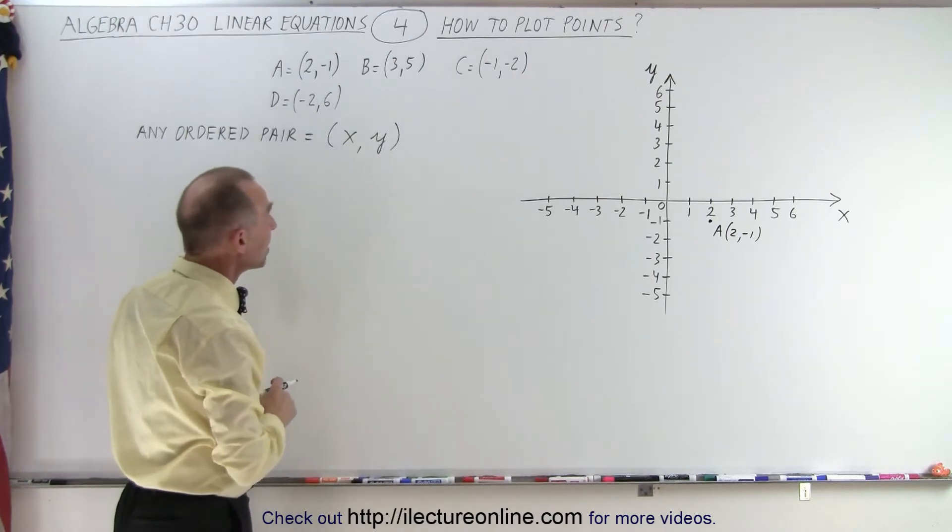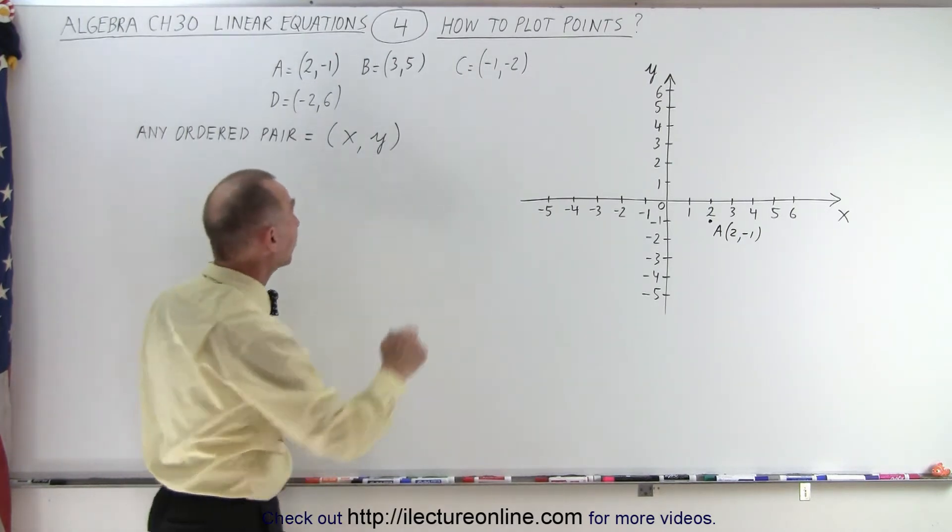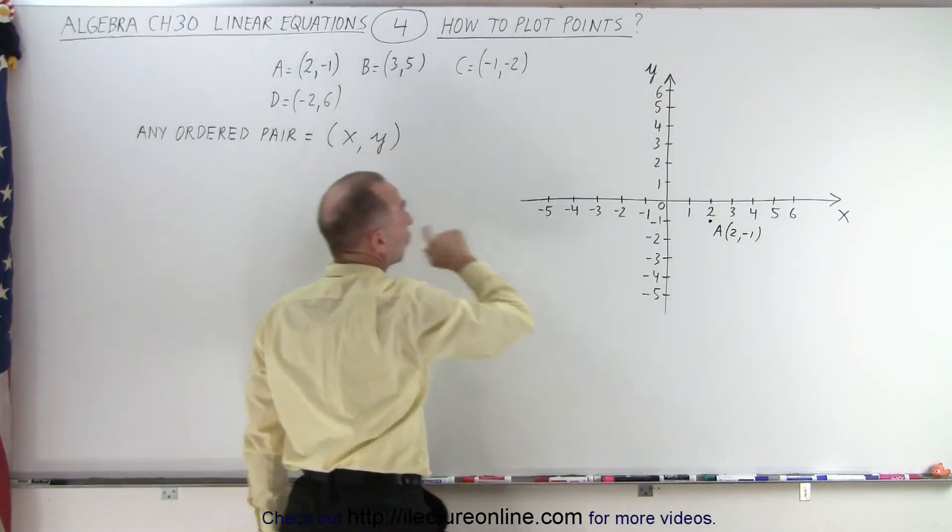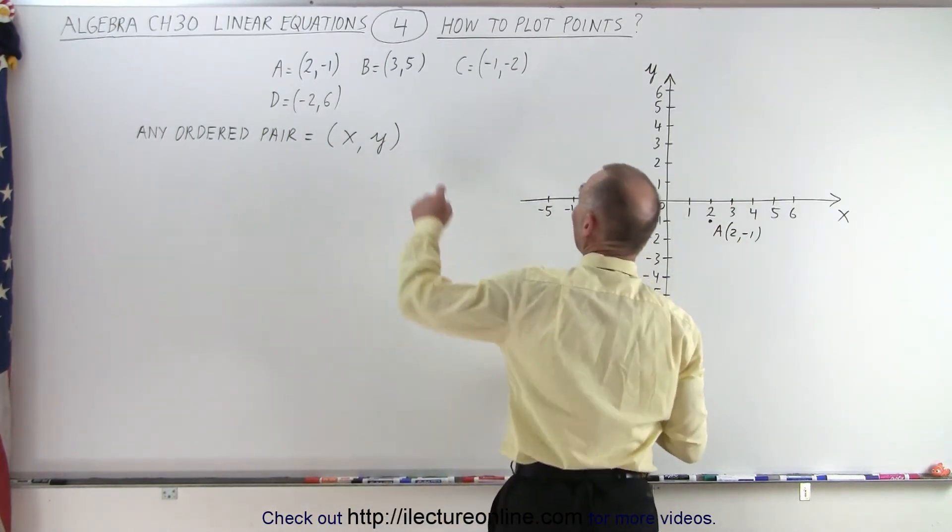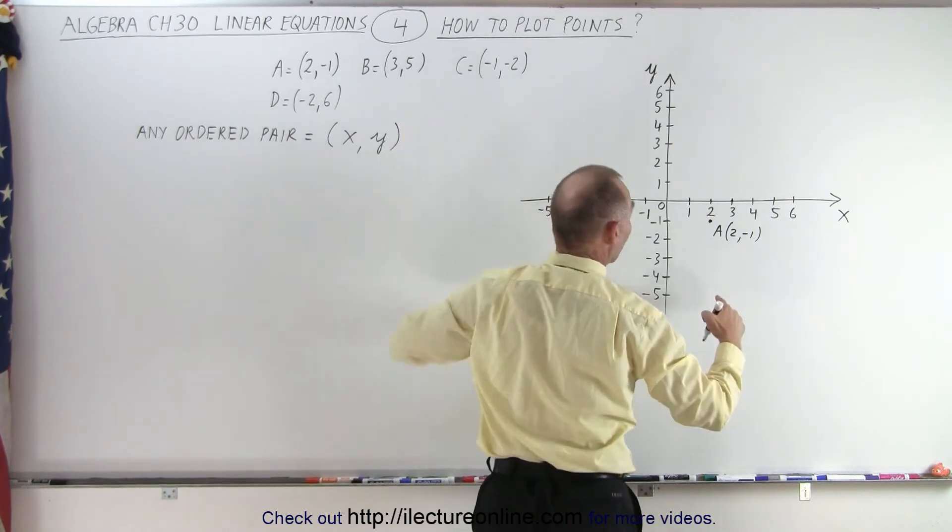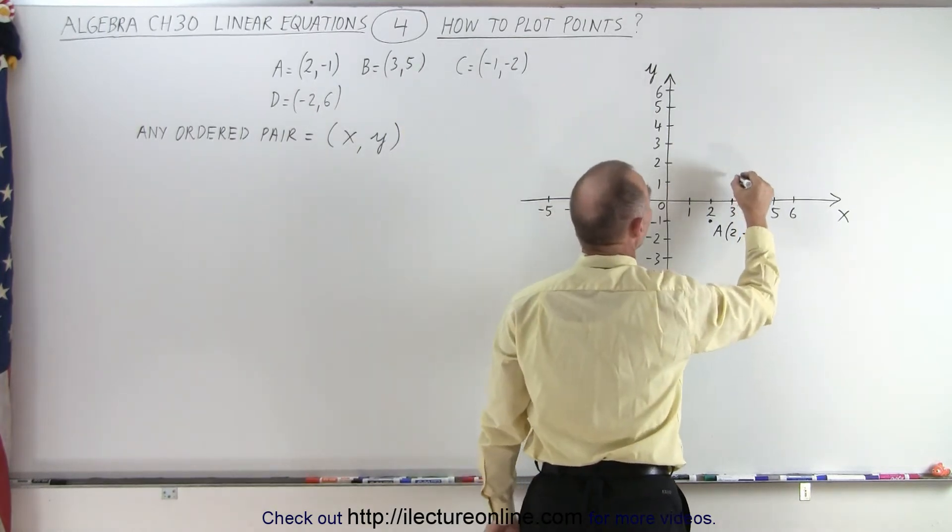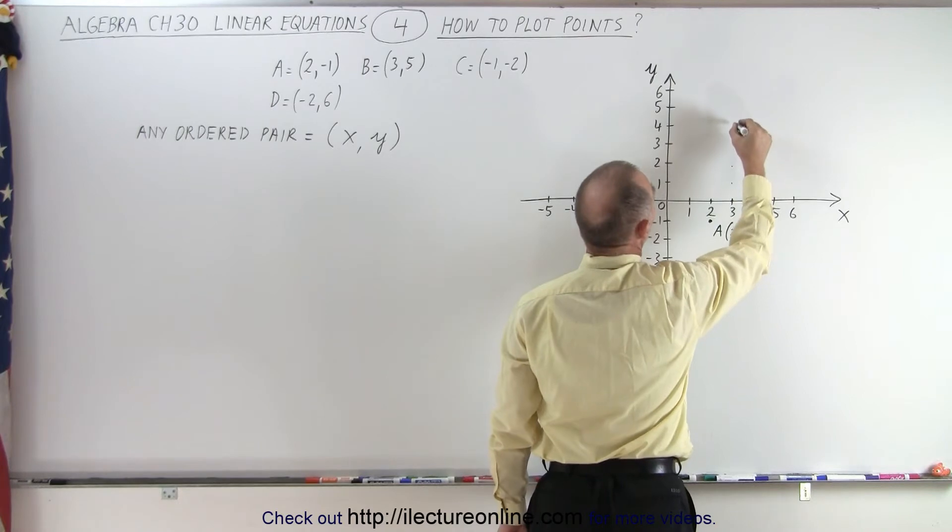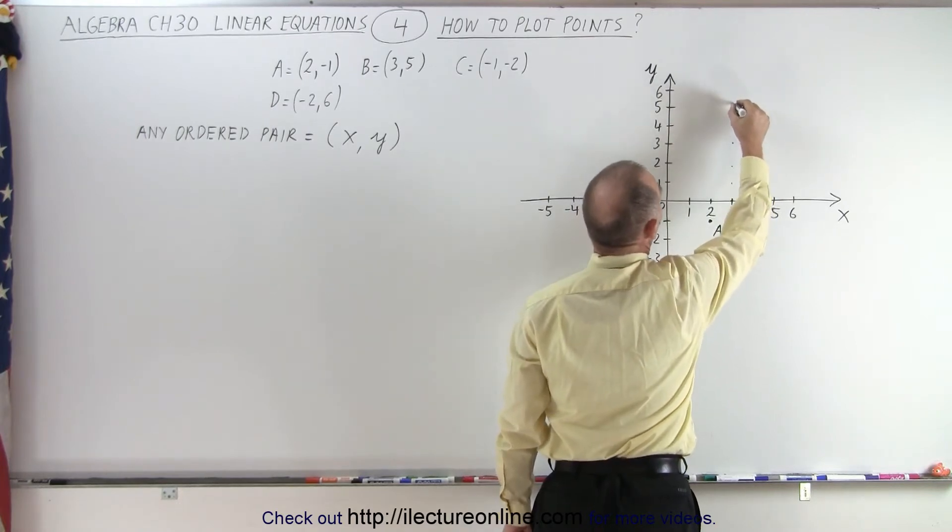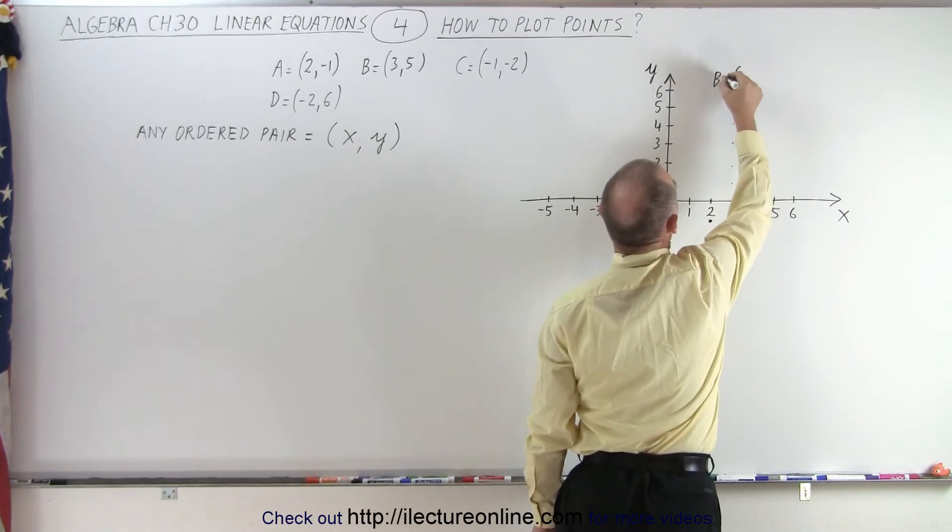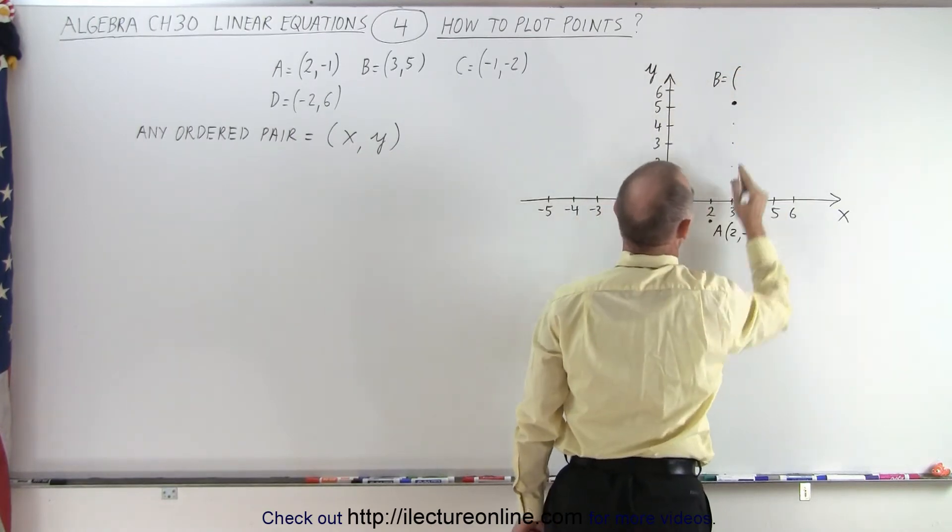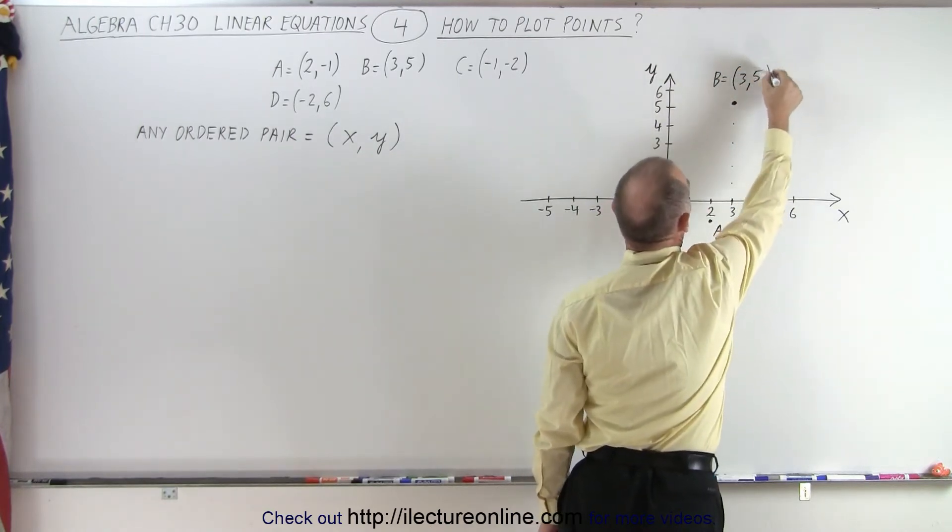Okay, let's find point B. Notice, again, we start with the x-value, which is 3 units to the right of the origin. 1, 2, 3, so we put a point right there. And now we see that the value is a positive 5, so we go up 5 units. 1, 2, 3, 4, 5. And then that's the point we're looking for. So there's point B, which has the coordinates 3 for x and 5 for y.